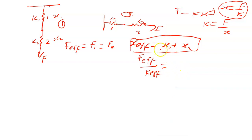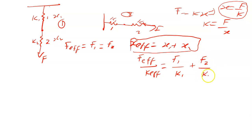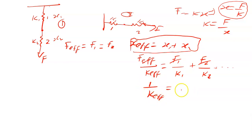Since for springs in series the effective force equals the force on spring 1 equals the force on spring 2, the force terms cancel. This gives: one over the effective spring constant equals one over k1 plus one over k2.